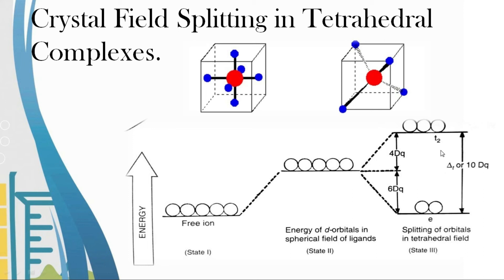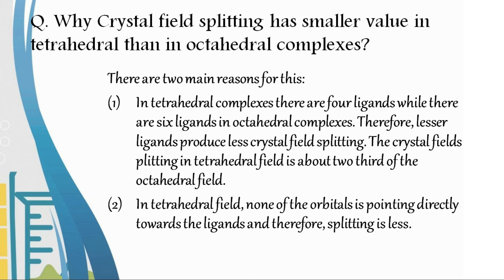Why does crystal field splitting have a smaller value in tetrahedral than octahedral complexes? There are two main reasons: First, tetrahedral complexes have four ligands while octahedral complexes have six ligands, producing less splitting. The crystal field splitting in tetrahedral is about two-thirds of the octahedral field. Second, in tetrahedral field, none of the orbitals point directly towards the ligands, resulting in less splitting.